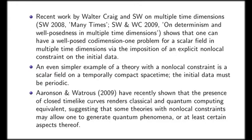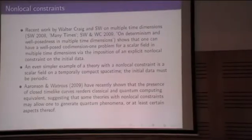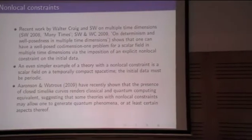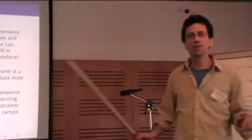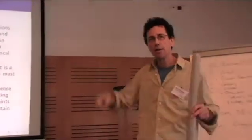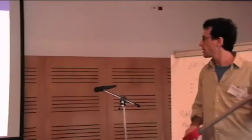And an even simpler example would be a theory on an ordinary space-time, which is ordinary except that it's temporally compact, so a sort of flat space-time but compactified in the time direction. So it has closed time-like curves. In the absence of interactions, it's not that hard to write down the constraint on the initial data. It essentially has to be periodic in the circumference of the compactification.